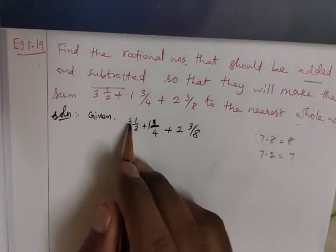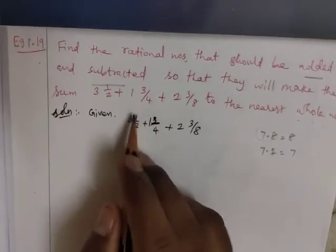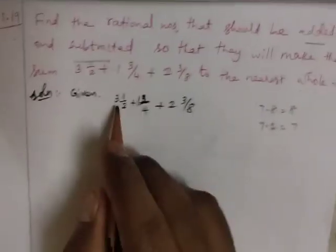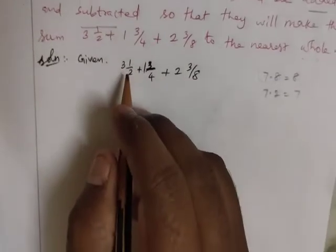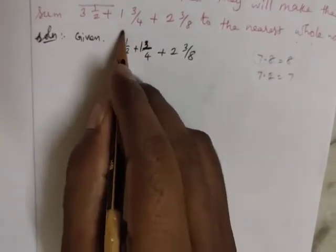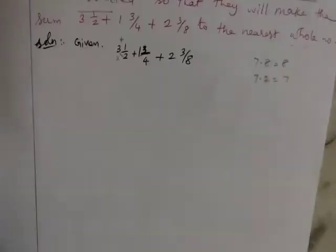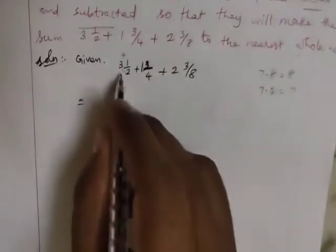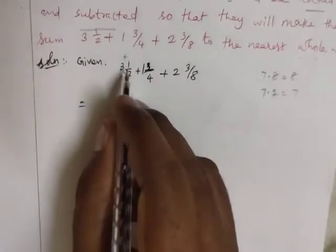First, how do you do it? Mixed fractions. The given mixed fractions are converted into improper fractions. Now we have to add. If you add the numbers, the result will be 7 something.